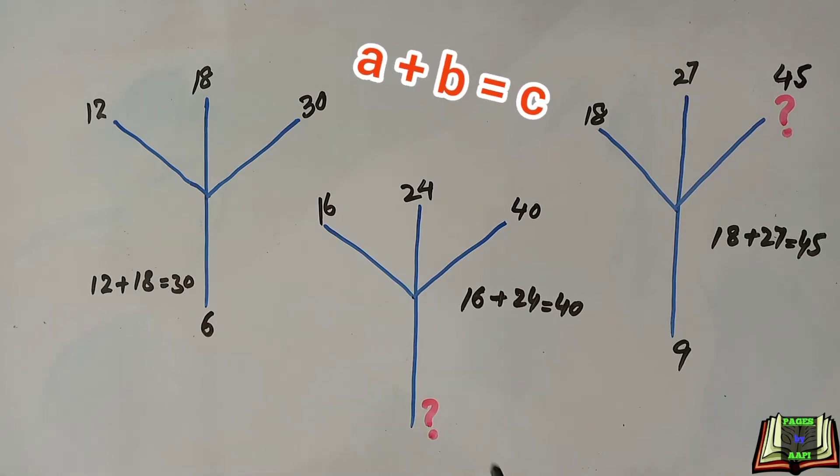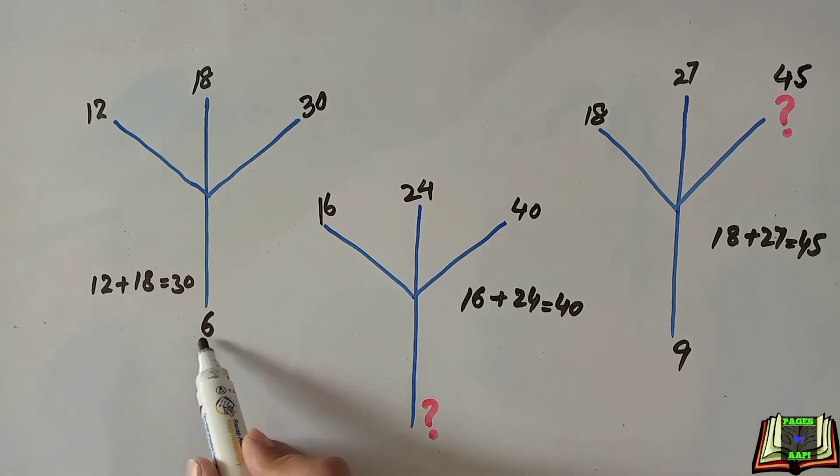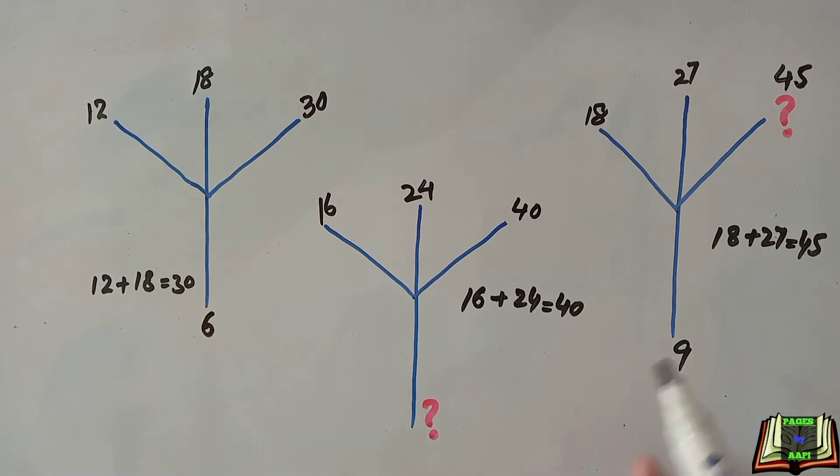Now we are going to solve the second question mark by looking how the other two numbers are placed at the bottom of the picture and we will try to find out the pattern. By looking carefully we can see that the numbers at the top of the picture are multiples of the number which is given at the bottom of the picture.